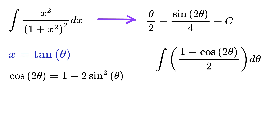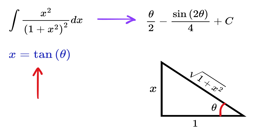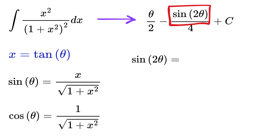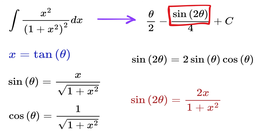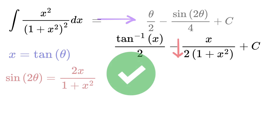Don't forget the plus c, as this is an indefinite integral. Now, if tan theta is x, then using this right triangle, we get sine and cos theta. Therefore, sine 2 theta will then be equal to this in terms of x. So the final answer is this, and we are done.